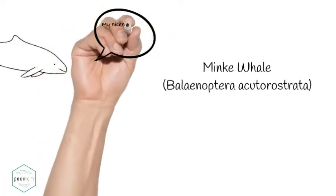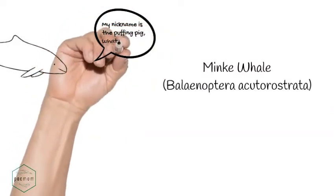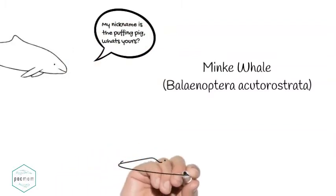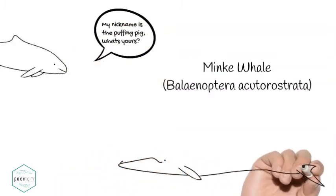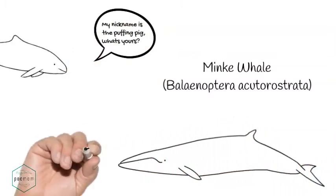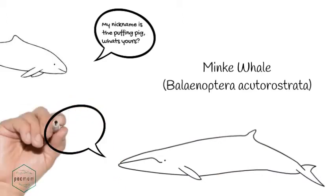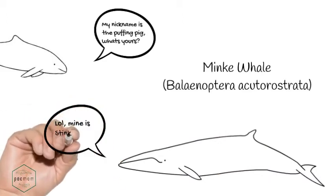The minke is the smallest of the baleen whales, measuring up to 35 feet, only 10 tons, and living up to 50 years. They are more elusive than other baleen whale species, making them harder to study and observe. No cetacean breath smells good, but minkies take the cake.